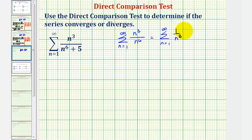We need to recognize that this series would converge by the p-series test with p equals three. Because we're comparing to a converging series, we want to show the terms of the given series are less than or equal to the terms of this converging series. Note that by the p-series test we could also use the series where we have the summation of one divided by n squared to do this direct comparison test. If we use that series, notice how the terms would be even larger than the terms of this series.